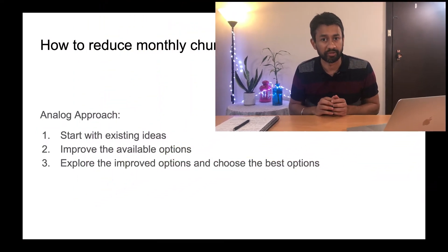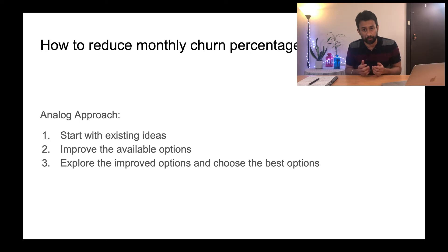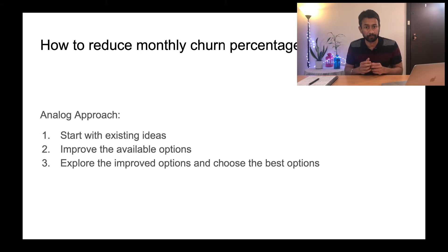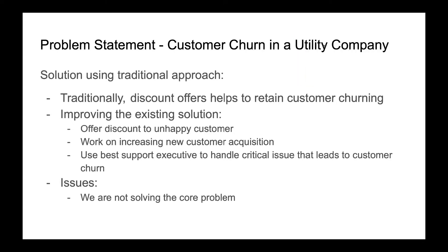Before going into first principle thinking, let's see what happens in a traditional approach, or analytic thinking. In a traditional approach, we start with an existing idea about the problem, try to improve it with various options, and finally pick up the best option that helps us solve the problem to an extent. If we take the example on my screen, we are trying to solve the problem of customer churn for a utility company.